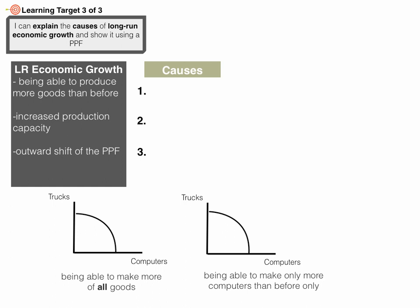Long-run economic growth has a definition distinct from short-run economic growth. Short-run economic growth, which we'll get to later in the course, more or less means making more goods than before. Long-run economic growth, however, is having the ability to produce more goods than before — having increased production capacity or increased production possibilities — and we show this by an outward shift of the PPF.